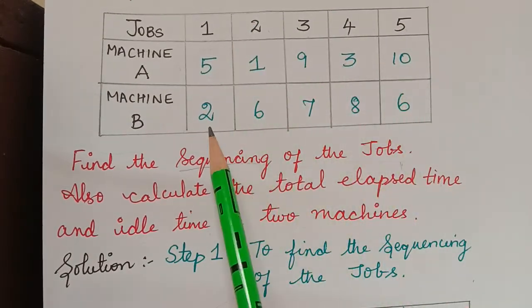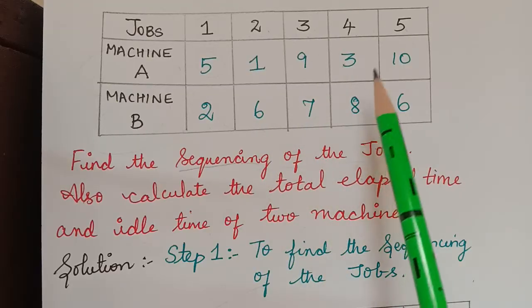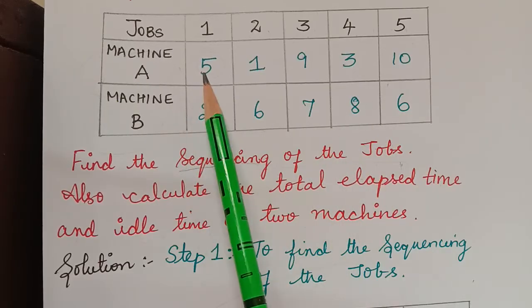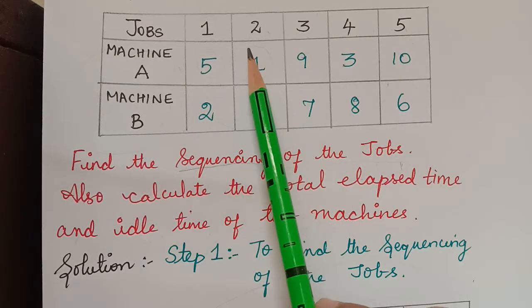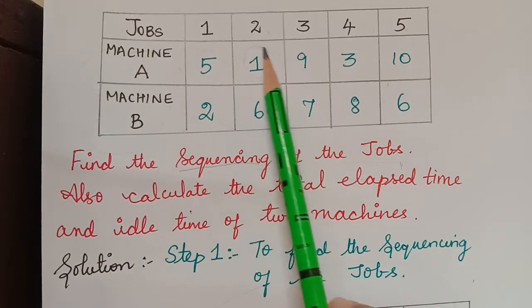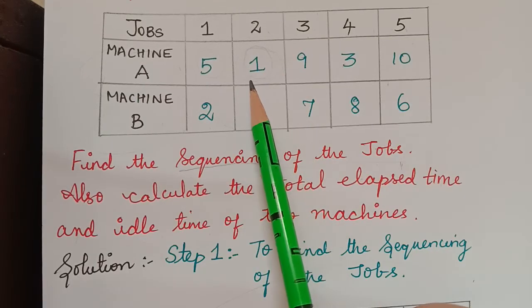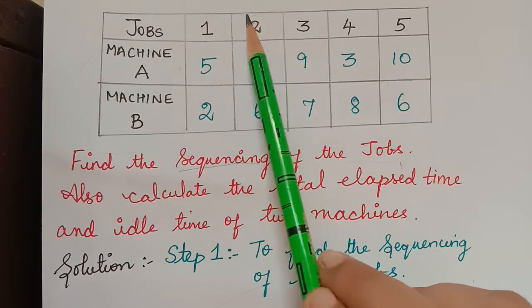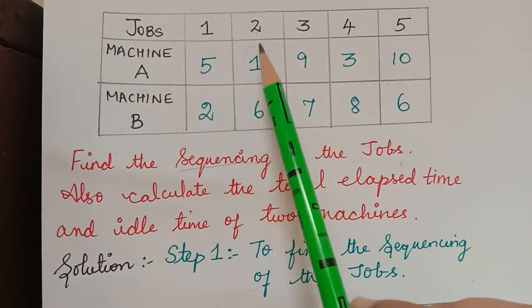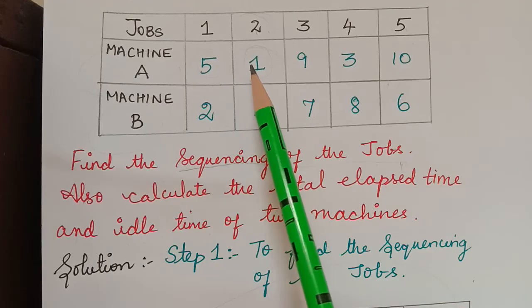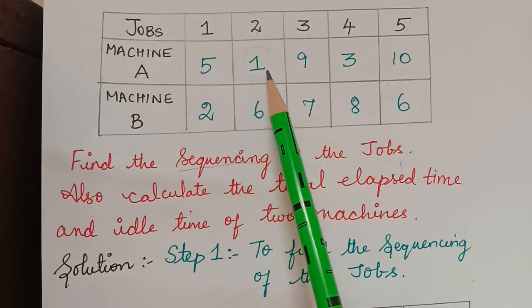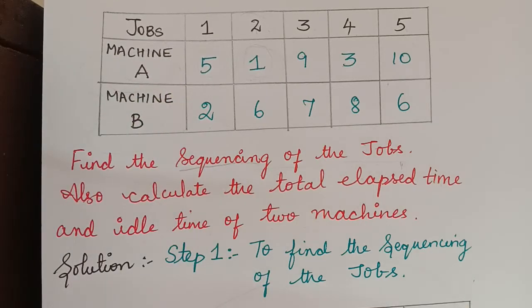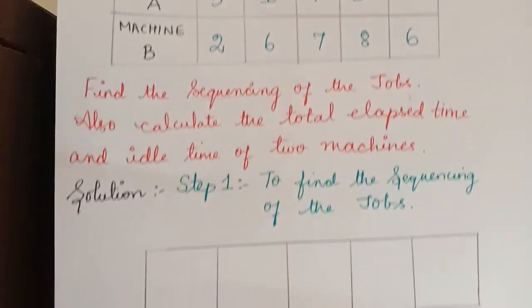Out of all the processing times, we check which is the least processing time. Out of all these values, the least value is 1. So 1 is the least processing time, and the job corresponding to 1 is job 2. This least value corresponds to machine A, so job 2 has to be performed first.